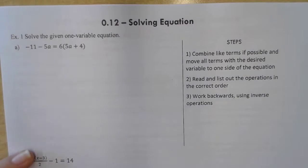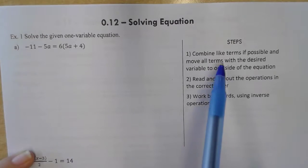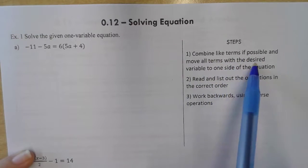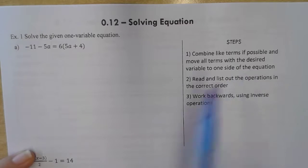So steps are provided for you. What's wrong with this? Get it together dot cam. All right. Let's do it. Step one, combine like terms if possible and move all the terms with desired variable to one side of the equation.